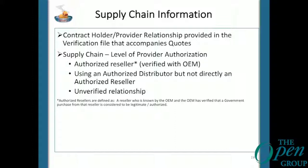Moving down from authorized reseller, the next level of risk is getting products from a distributor. So it went from the manufacturer to a distributor to the contract holder — a third set of hands involved. That's a third chance for malicious tainting. Maybe the price is cheaper because they got it from the distributor and pass savings on to you, but it's a third chance for compromise. The last level is the dreaded unverified relationship, which doesn't necessarily mean it's bad — because not everyone has an authorized reseller program.